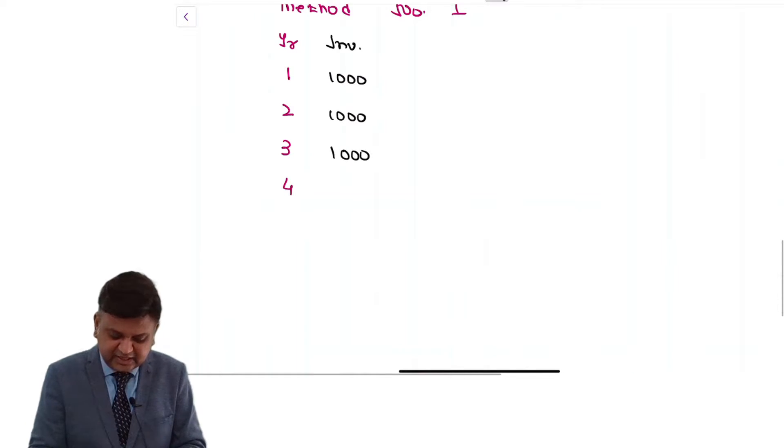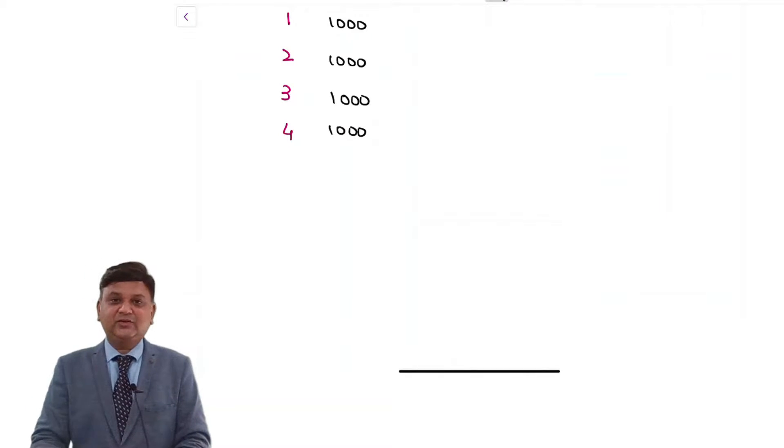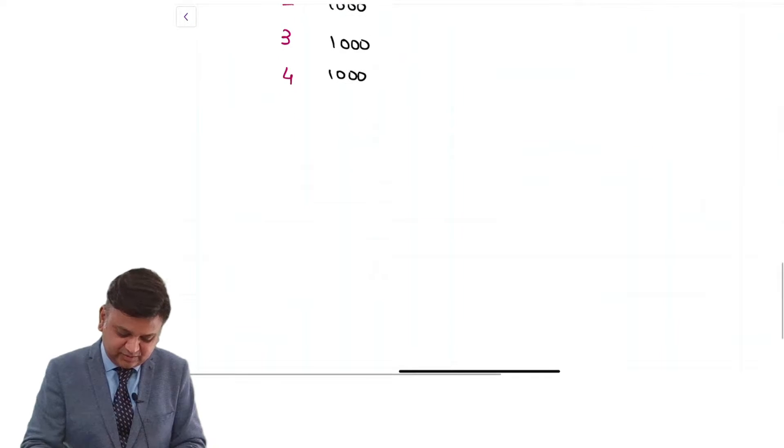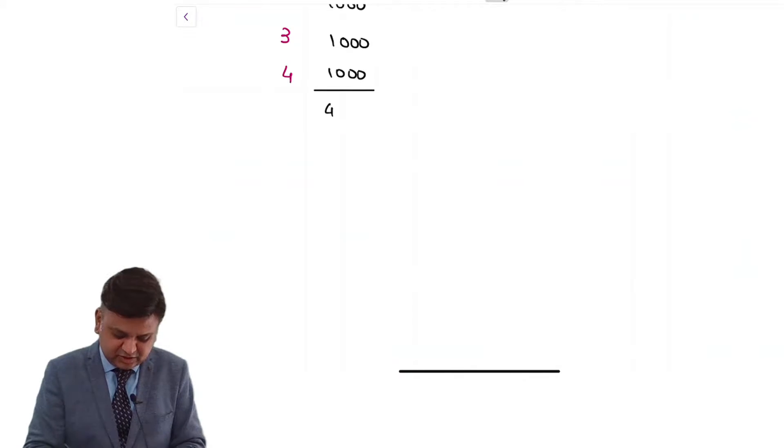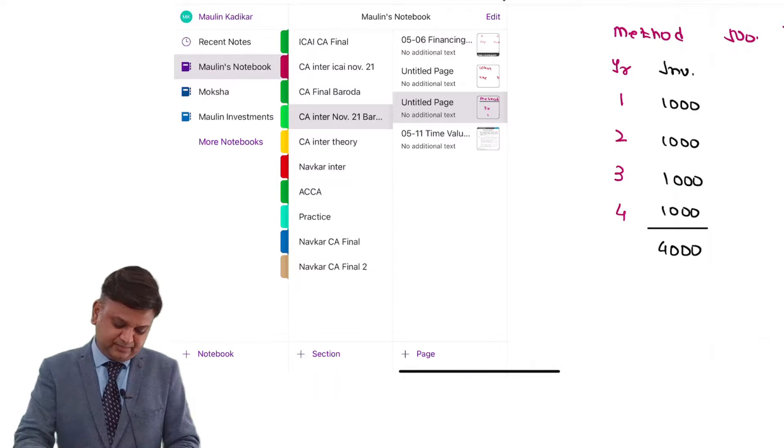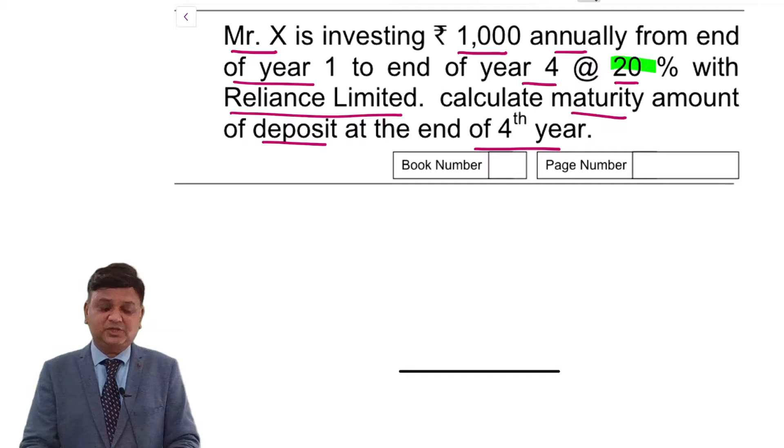We can say that even if the rate of interest is 0 percentage, then the maturity amount of deposit will be 4,000. Even if the rate of interest is 0 percentage, maturity amount is 4,000. However, there is interest income. What is the rate at which you are going to get interest? 20 percentage.